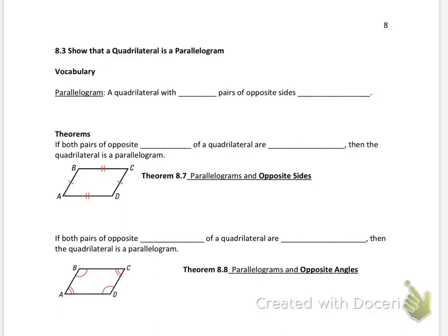In this video we're going to do section 8.3, showing that a quadrilateral is a parallelogram. A parallelogram is a quadrilateral with both pairs of opposite sides congruent.